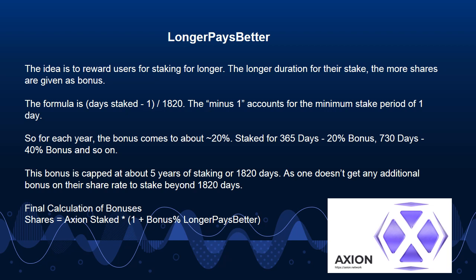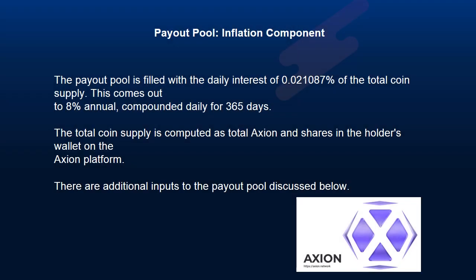Final calculation of bonuses: Shares = Axion staked × (1 + bonus percent from Longer Pays Better). Payout Pool — Inflation Component: The payout pool is filled with the daily interest of 0.021087% of the total coin supply. This comes out to 8% annual, compounded daily for 365 days. The total coin supply is computed as total Axion and shares in the holder's wallet on the Axion platform. There are additional inputs to the payout pool discussed below.